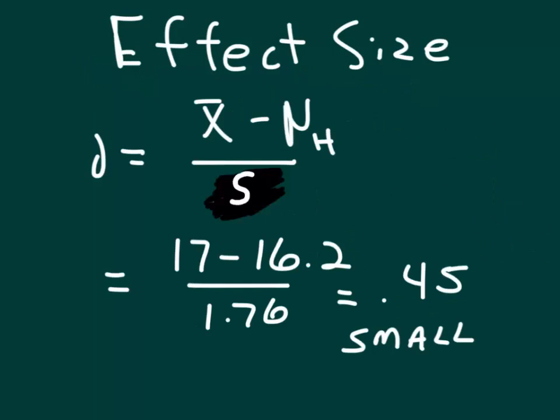So effect size, it's just like we had before, except you can see that instead of sigma here, I've replaced that with an S because it's what we have, sample standard deviation. Numerically, of course, that's still going to be 0.45, which is small because it's between 0.2 and up to less than or equal to 0.5.